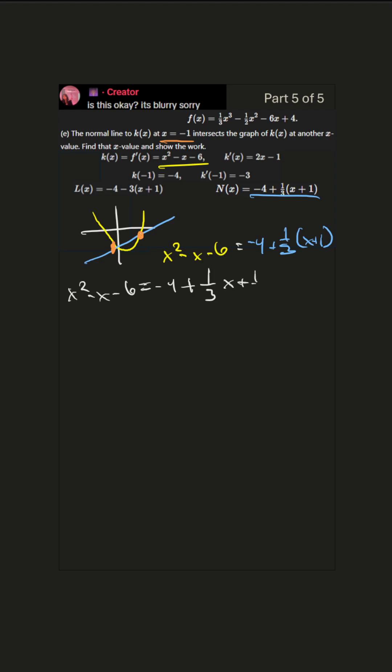Multiply everything by 3 to get rid of those fractions. We'll get 3x squared minus 3x minus 18 equals negative 12 plus x plus 1.